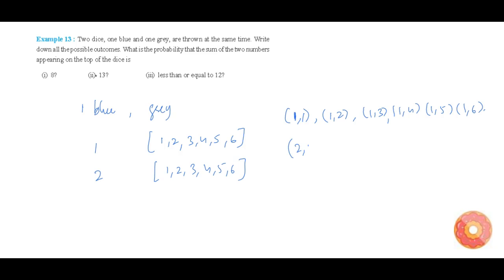The ordered pairs are: (2,1), (2,2), (2,3), (2,4), (2,5), and (2,6). Sorry, I had forgotten (2,2) initially. These are all the possible values when the blue die shows two.